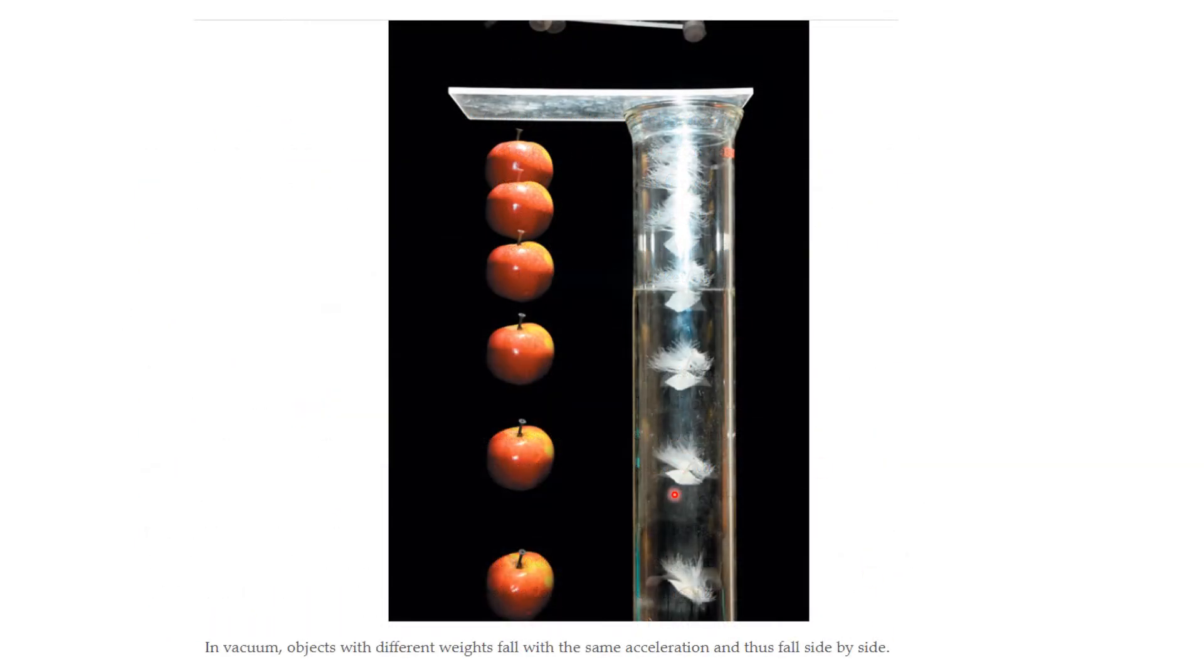And here you see a picture. This is a vacuum chamber where we're dropping a feather. And out here, we're dropping an apple. And you see that they stay lined up with each other. So the feather, even though it weighs much less than the apple, they fall at the same rate.